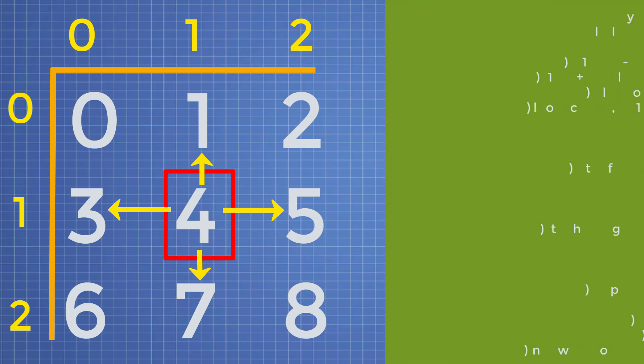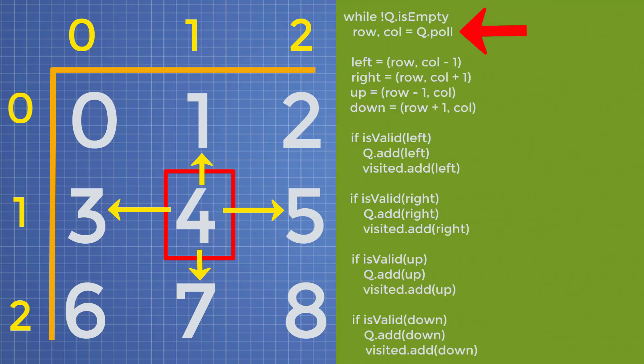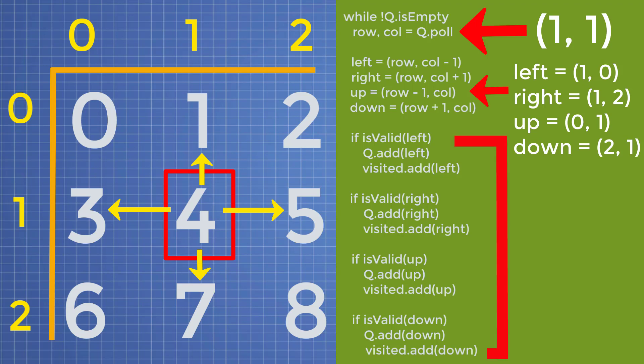So if we were to look at some pseudocode for a BFS, it would look something like this. We would first pull from our queue. So in this case, if we were to look at vertice 4, we would pull the coordinates 1, 1. And now that we have those row and column numbers, we would then have to calculate what the left, right, up, and down coordinates are. And now for every single direction, we're going to need to check if that position is even valid. If it is, we need to add that position to our queue and add the position to our visited set. So as you can see from this code where we're checking if the position is valid and adding it into our data structures, this code is duplicated across each direction that we're checking. And this is a very common way that I see people solve breadth-first search problems.